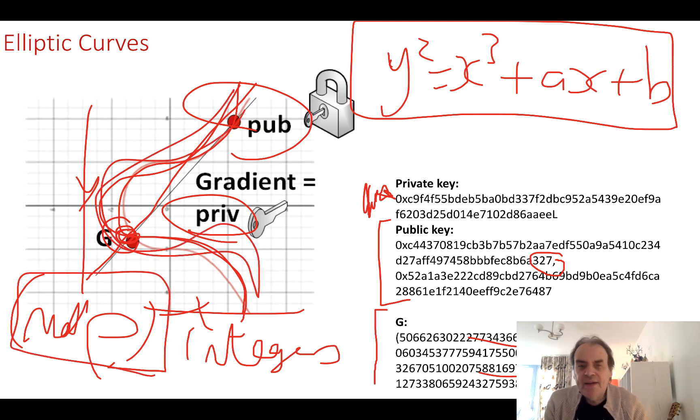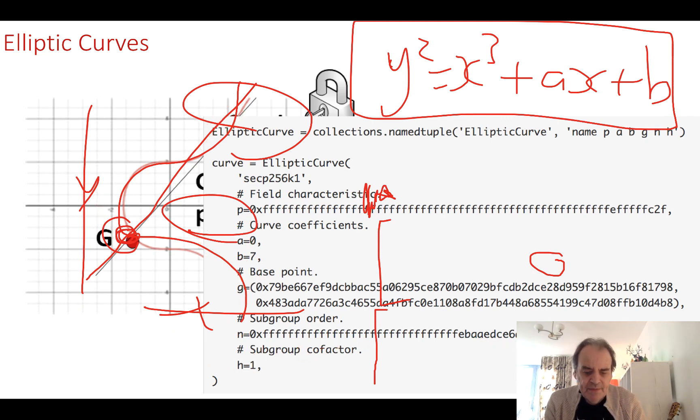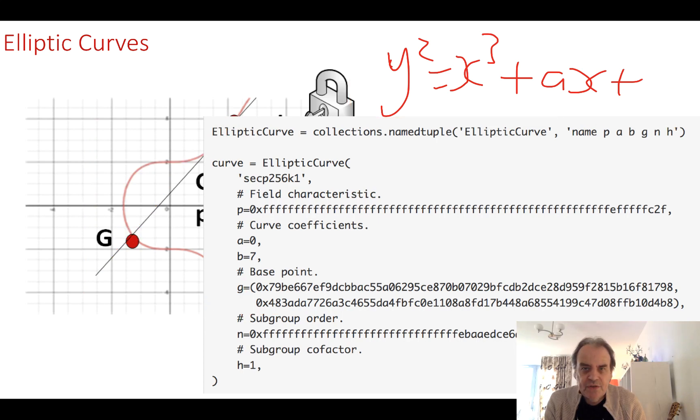We're dealing with integers and also mod p. We can't just take our normal curve because we will only plot within integers. That's what we do inside our elliptic curve cryptography. Here's an example of the parameters that we get.